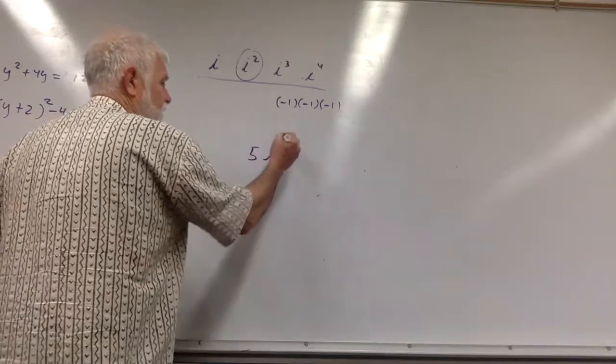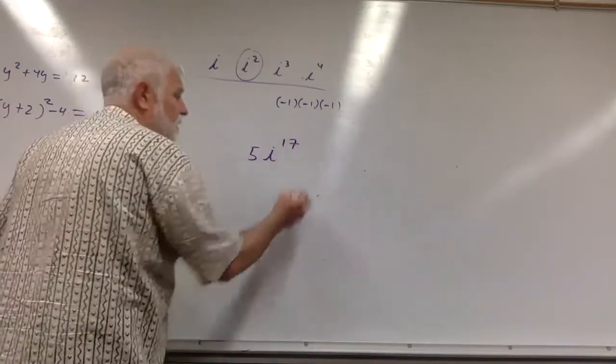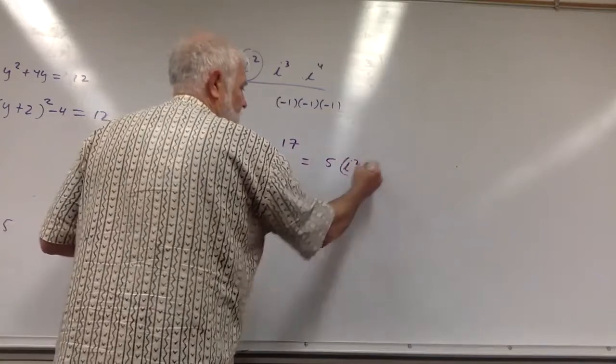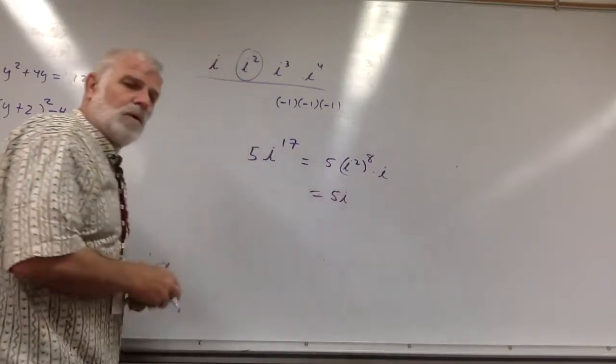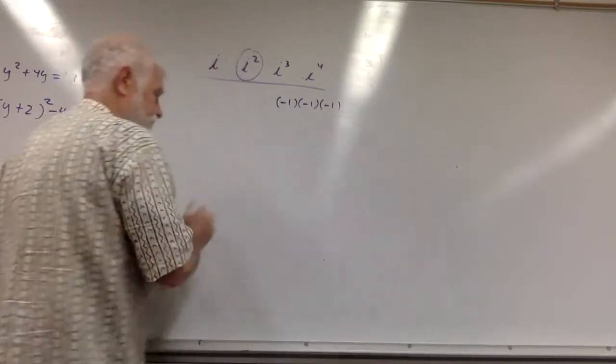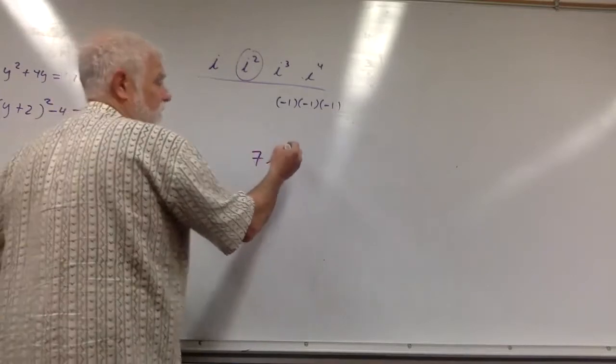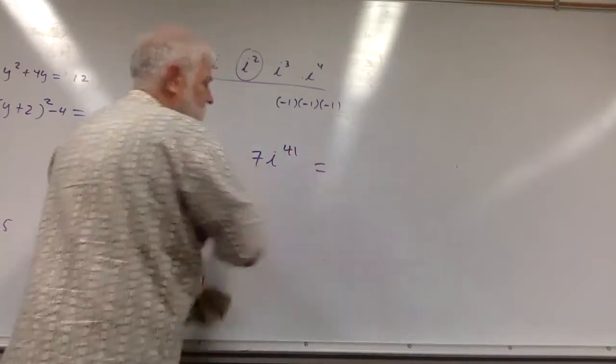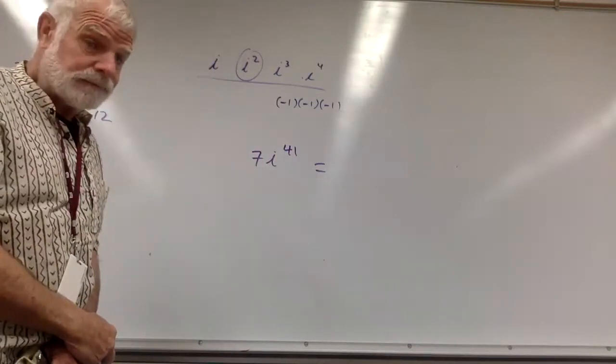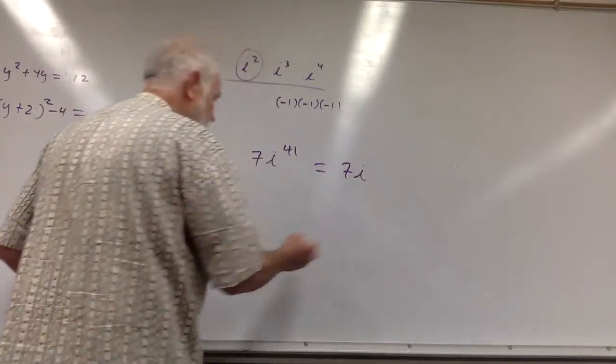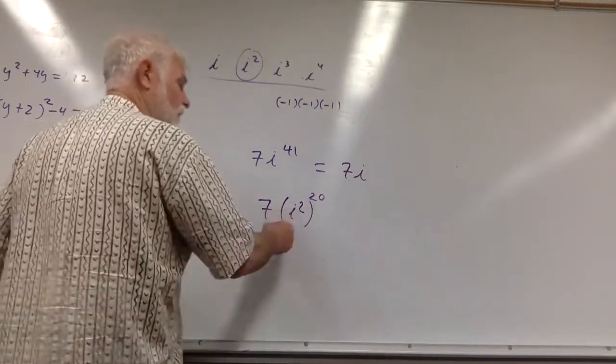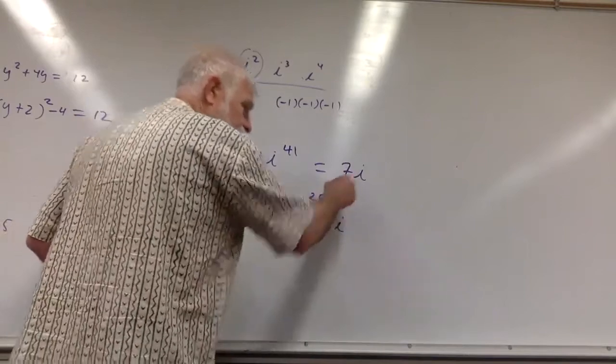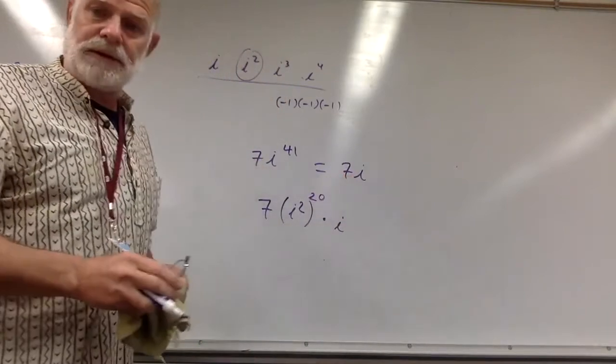Do one more quick one. 5i to the 17th. So we got 5 × i² eight times × i, so that's 5i. See if you can do one in your head without writing. Let's go with 7i to the 41st. What's it equal to? 7i. Let's find out: 7 × i² twenty times gets me to 40. That is positive one, so yes, 7i.